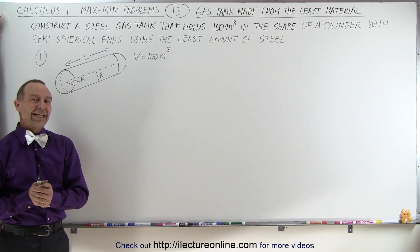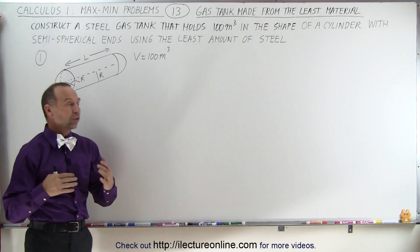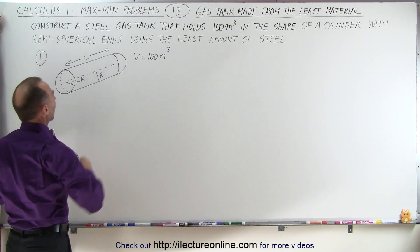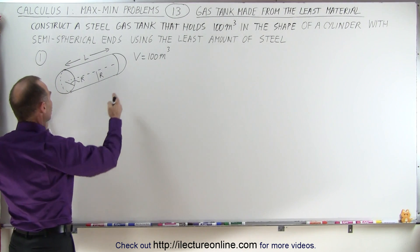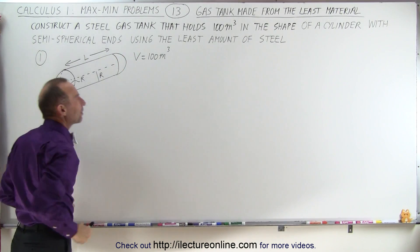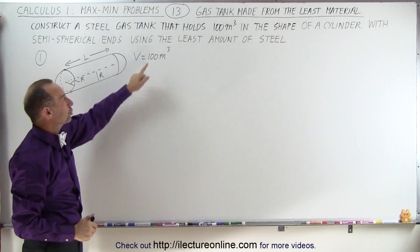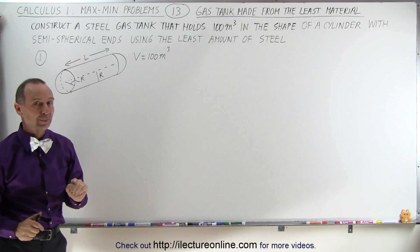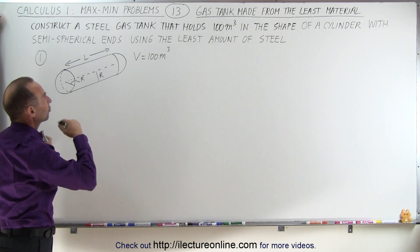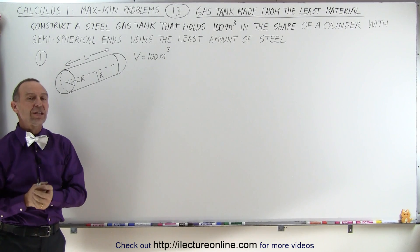Welcome to ElectronLine. In this example, we are to construct a steel tank that holds gas. The shape of it is a cylinder with two semispheres at the end, and it's supposed to hold 100 cubic meters. What are the dimensions of this tank in such a way that we use the least amount of steel?